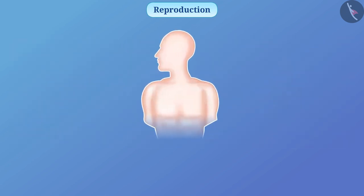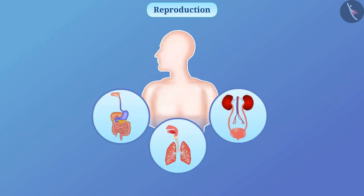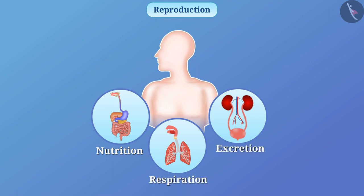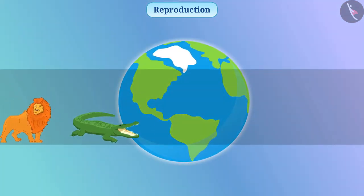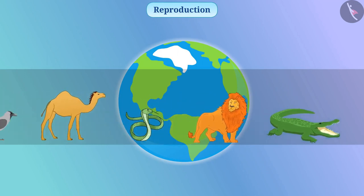We know that various processes like nutrition, respiration, excretion, etc. help to keep the organism alive. Reproduction is different from these processes — it helps the organism to keep its species alive. Without reproduction, no life is possible on earth.